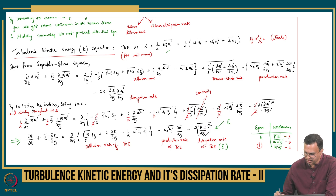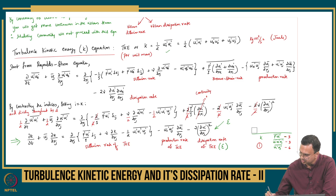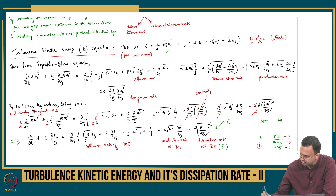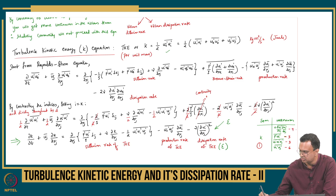And then the dissipation rate — ∂ui prime / ∂xj times ∂ui prime / ∂xj — is a second-order tensor. Again, 9 or 6 terms as you can think of. So the dissipation rate is another unknown here. I have the dissipation rate epsilon, which is ν times ∂ui prime / ∂xj times ∂ui prime / ∂xj, averaged — giving me an additional 6 or 9 unknowns.